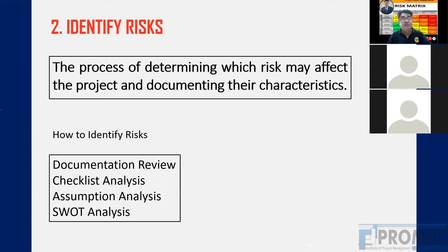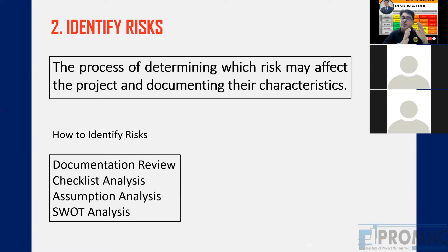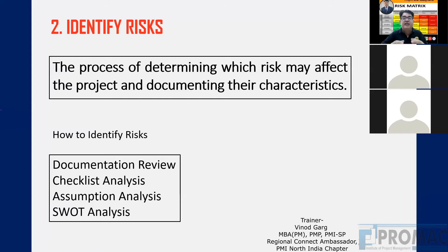There are four types of risk identification. Documentation review: reviewing documents and drawings — there may be discrepancies between structural and architectural drawings, between drawings and tender documents, or in the BOQ. Checklist analysis: based on previous projects we create a checklist covering quality, scope, schedule, drawings — noting where mistakes are normally found or things are missing that cause project impact. We do checklist analysis to find the risk list.